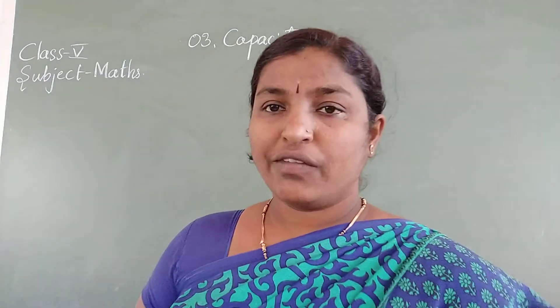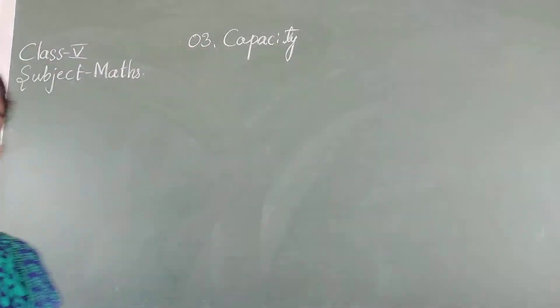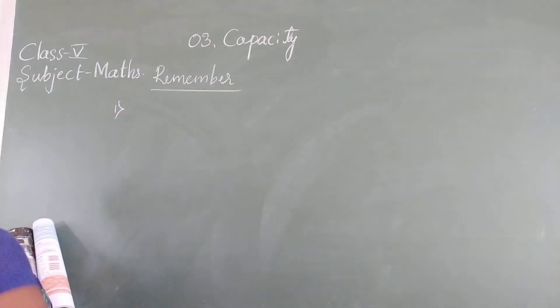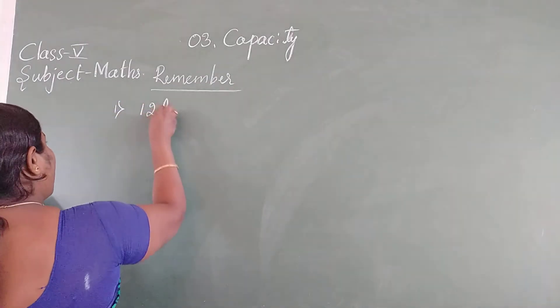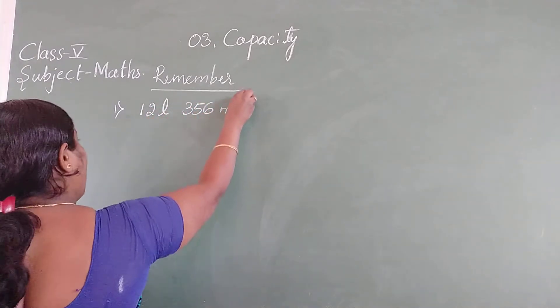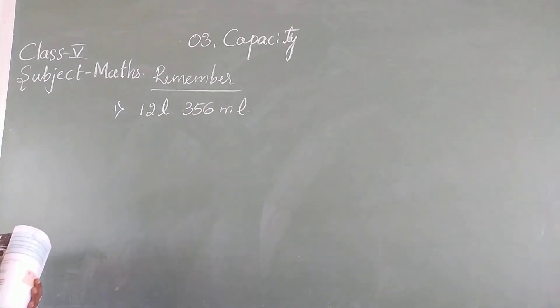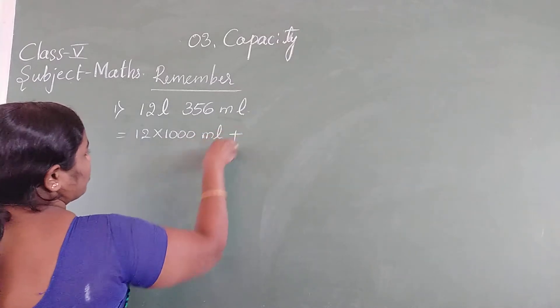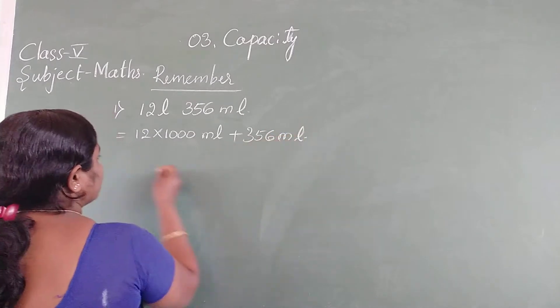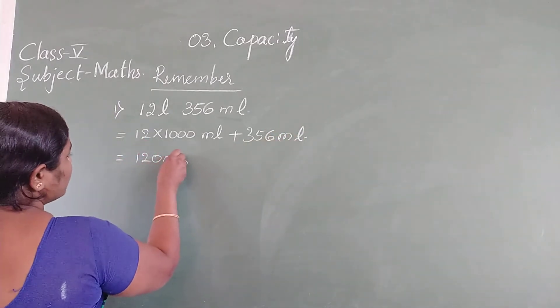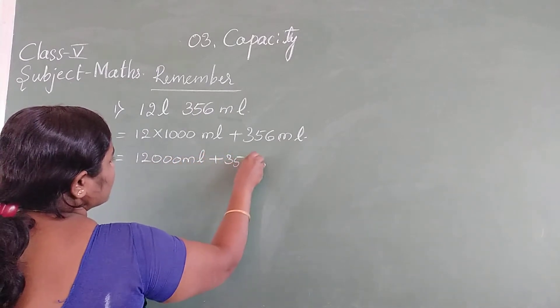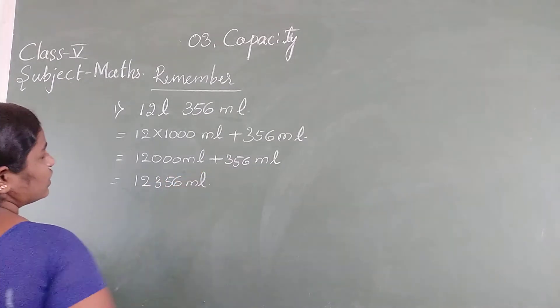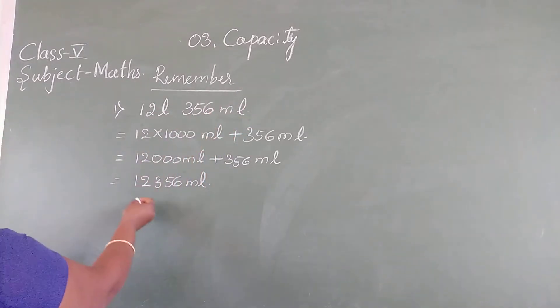Remember. First question: convert the following into millilitres. 12 litre 356 ml. We should convert this totally into millilitres. So 12 litre multiplied by 1000 equals 12,000 ml plus 356 ml equals 12,356 ml. We have converted 12 litre and 356 ml into millilitres.